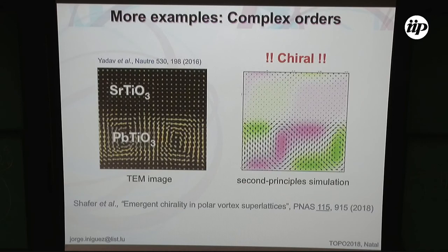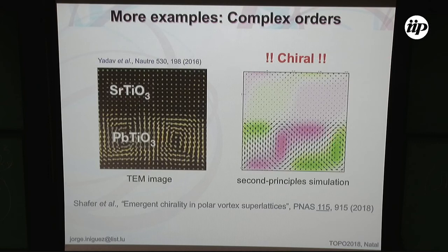Moving beyond bulk materials like lead titanate, we considered more complex situations. The first was superlattices of lead titanate and strontium titanate, in work with Pablo Aguado-Puente. I have shown beautiful vortices or multi-domain configurations with this kind of vortex structure before — here is a microscopic image and here is what we get from our models just by running the simulation without doing anything special. Even the characteristic lengths, the widths of the domains, come out very nicely.